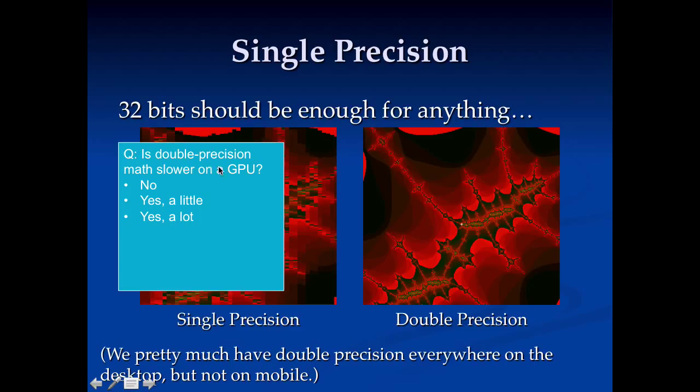Now, there's a question about this. Is double precision math a lot slower on a GPU? The answer is it's a lot. So typically double precision is about half as fast on a GPU as single precision, and that's because what they do is they put together half the hardware, or sorry, they take twice as much hardware, so you basically have half as many executions per cycle.